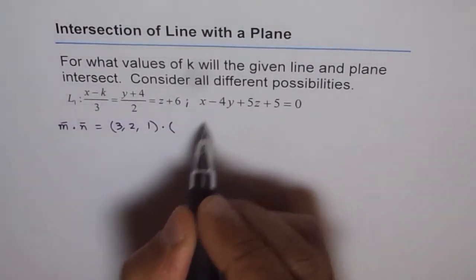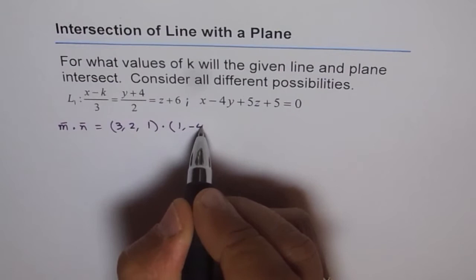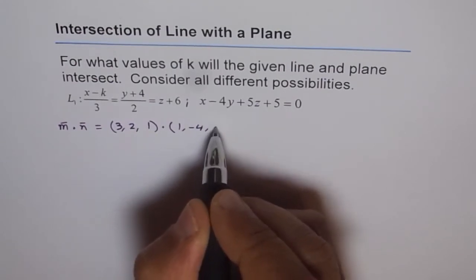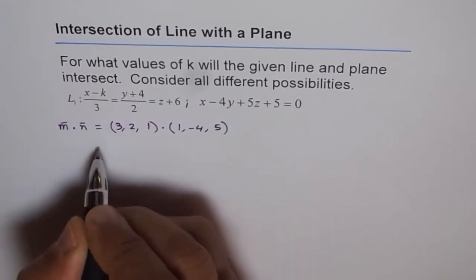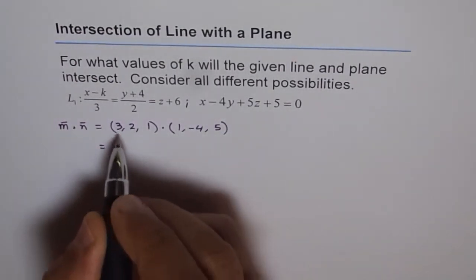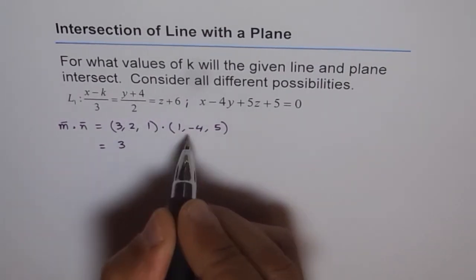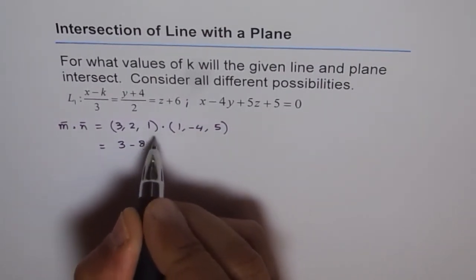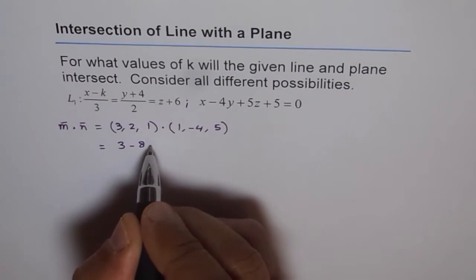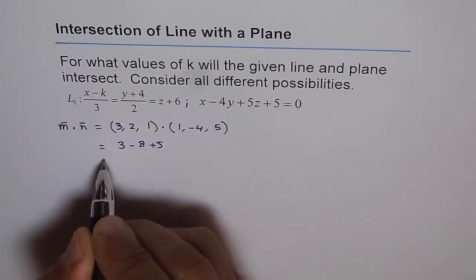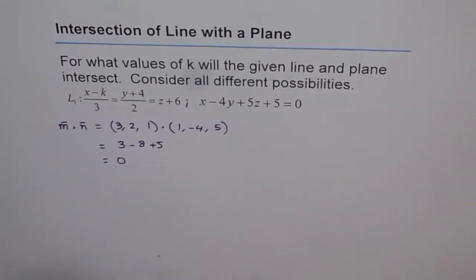The dot product of m and n gives us 3·1 + 2·(−4) + 1·5 = 3 − 8 + 5 = 0. The dot product is 0, which means the line is either parallel to the plane or it lies in the plane.